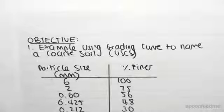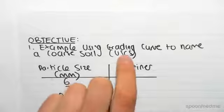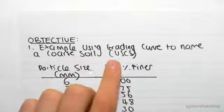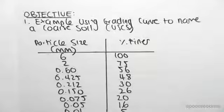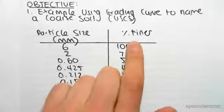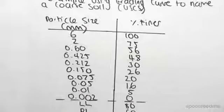Hey guys, the objective of this video is to do another example using a grading curve to name a coarse soil under the Unified Soil Classification System. Once again, we've got particle size against percent finer, which will allow us to proceed.